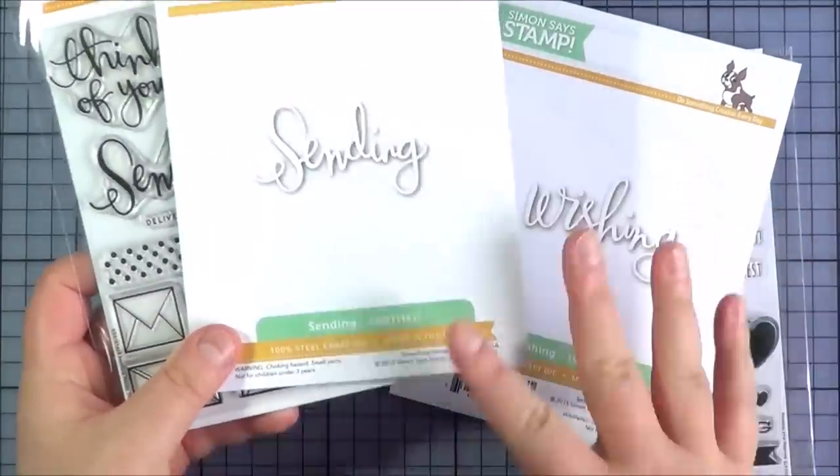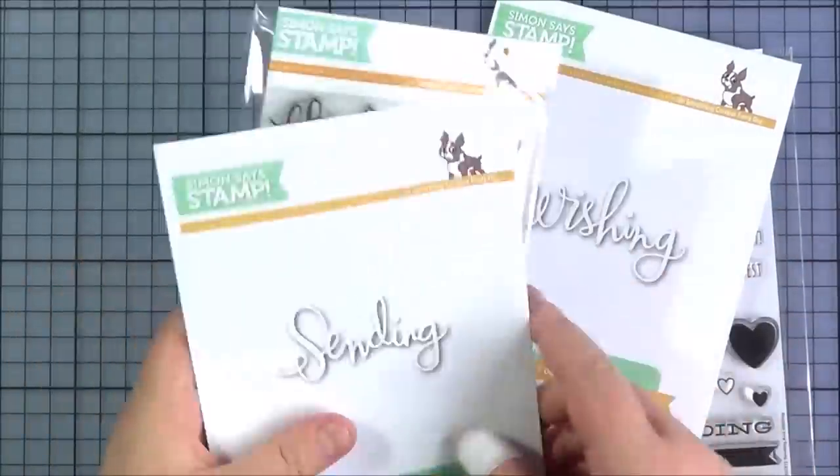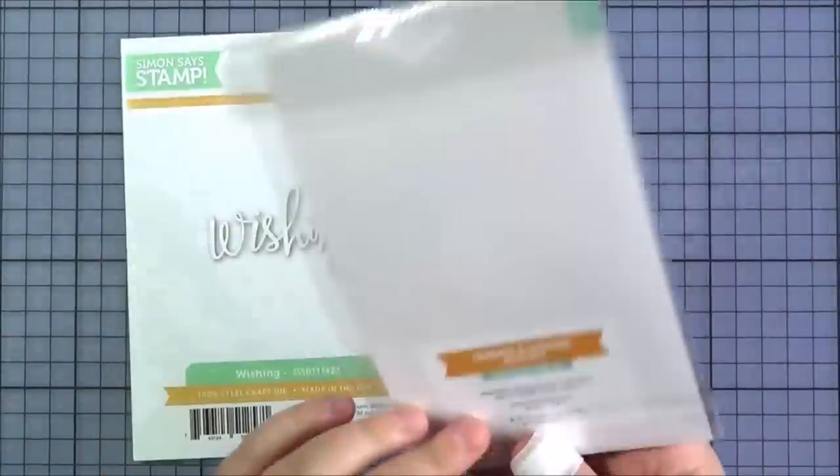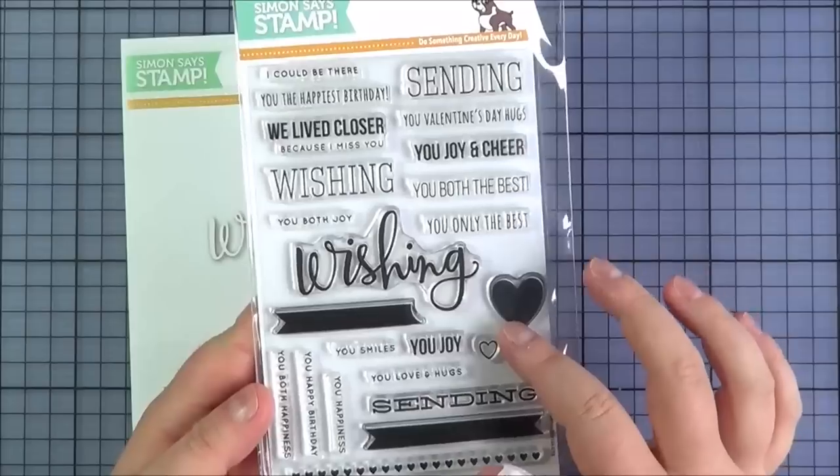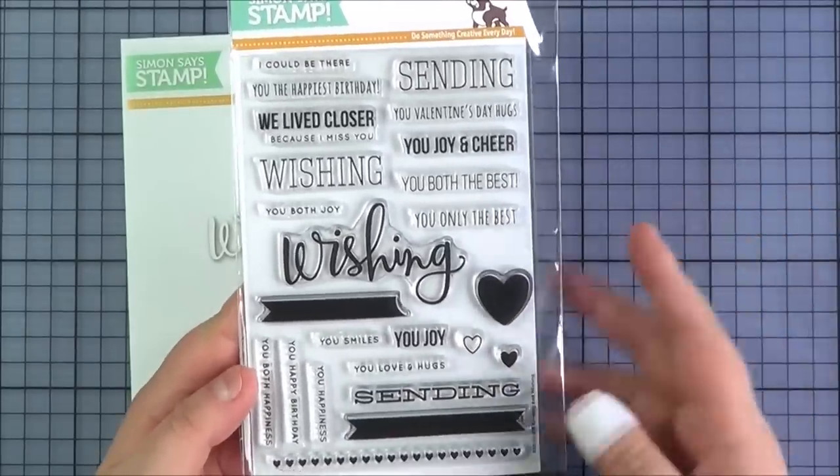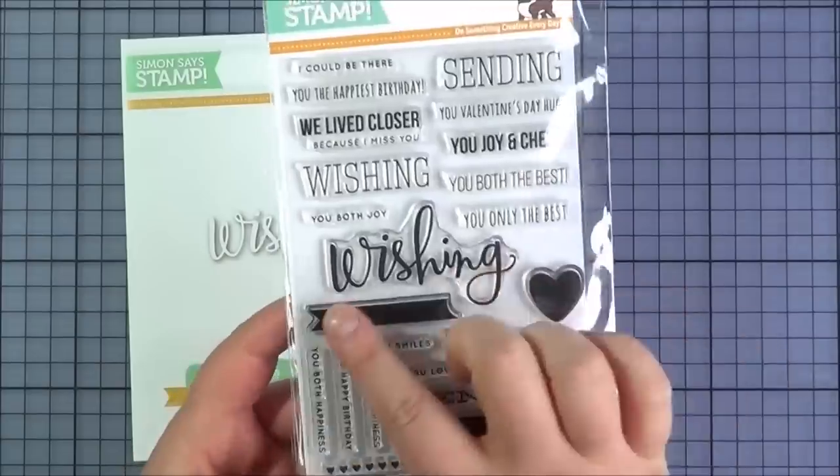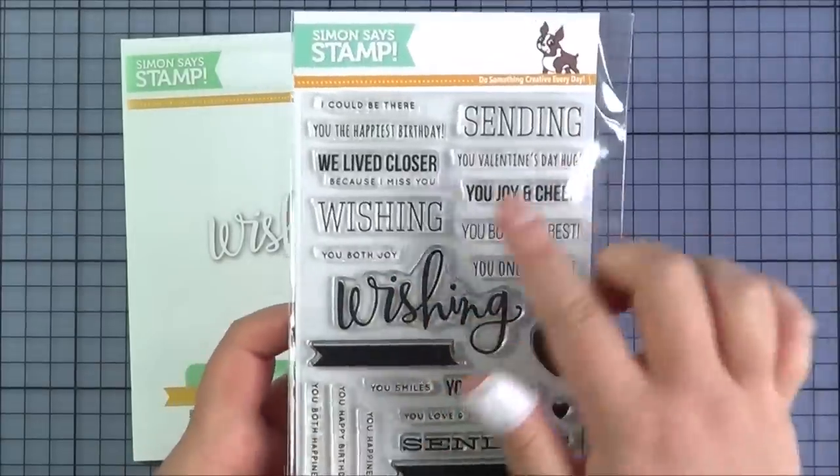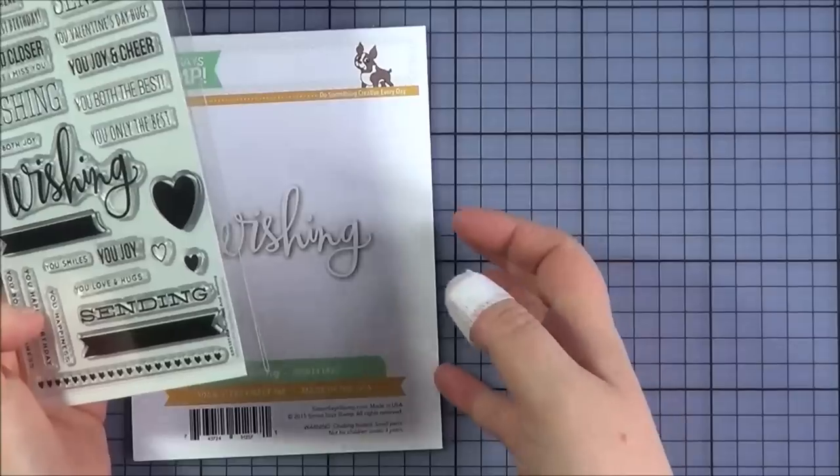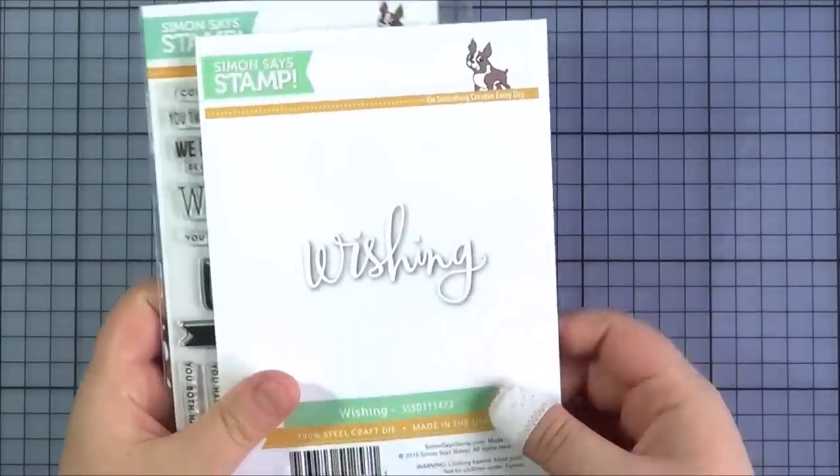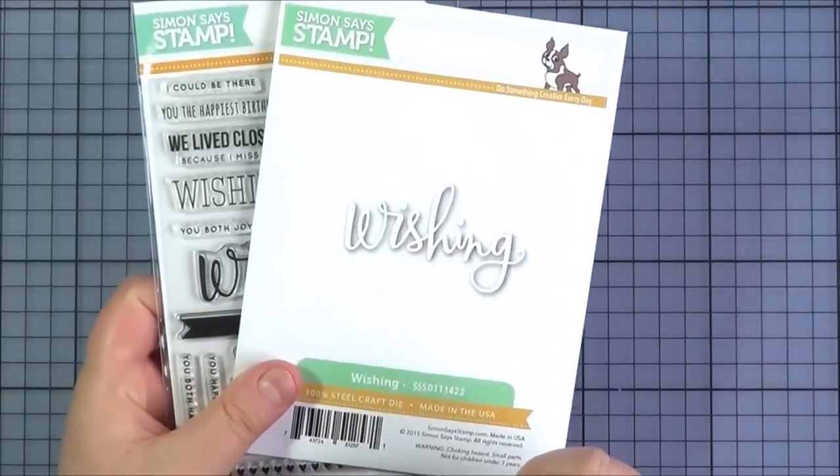And I did get the die to mix and match. This came as a four piece set but you can purchase them all separately. And then I got the sending and wishing that came in the same set. Really lovely. I really like this. It's been out for a little while now but finally got my hands on it. I really love this wishing. You can mix and match all the sentiments. You've got the little banner as well that you can add on. Really pretty. And I like the wishing die that you can coordinate with it as well.